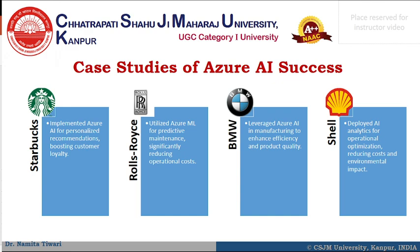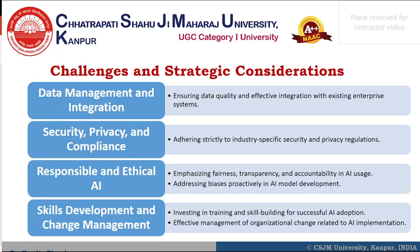Shell applied Azure AI-driven analytics to optimize oil drilling operations, leading to a 30% reduction in operational costs and minimized environmental impact through more precise resource allocation and reduced spill incidents. These case studies illustrate how diverse industries can leverage Azure AI to address specific challenges and achieve measurable business outcomes, demonstrating the technology's versatility and impact in real-world scenarios.